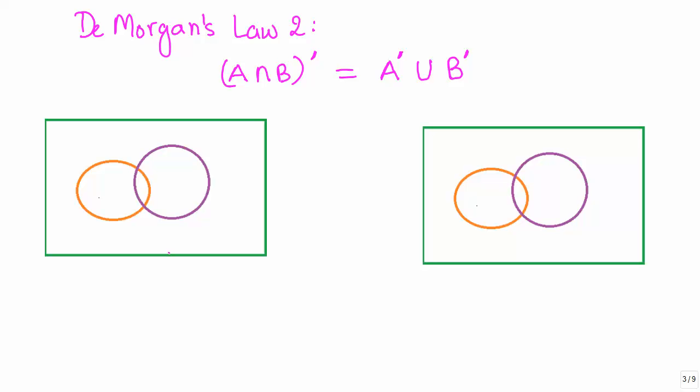Okay, so in this video, let us look at demystifying the second law of De Morgan. That is, the complement of intersection of two sets is equal to the union of the individual complements.